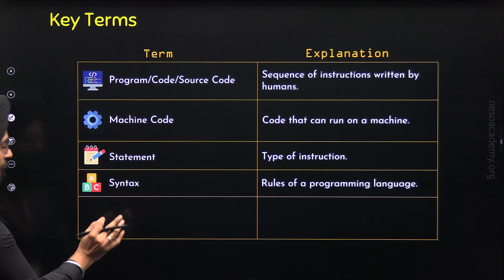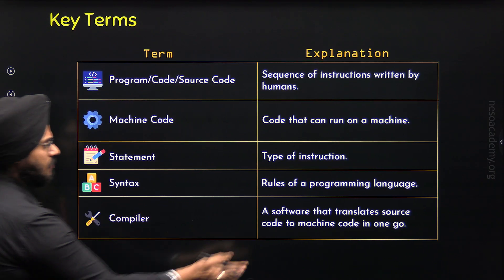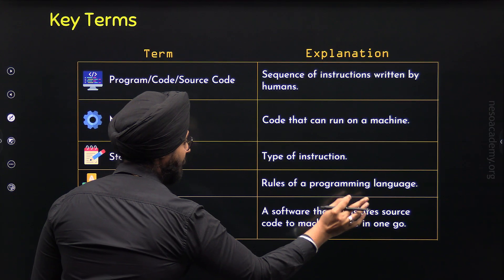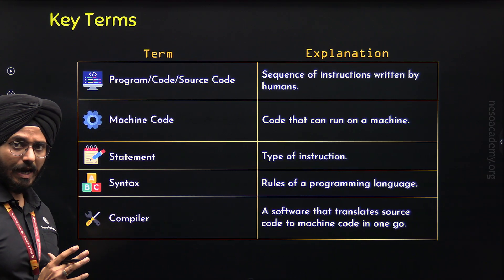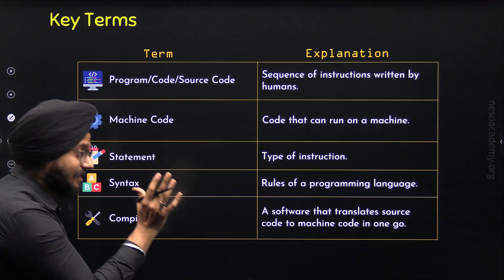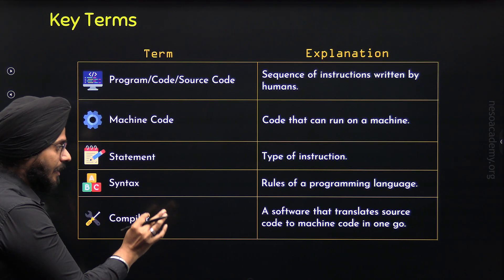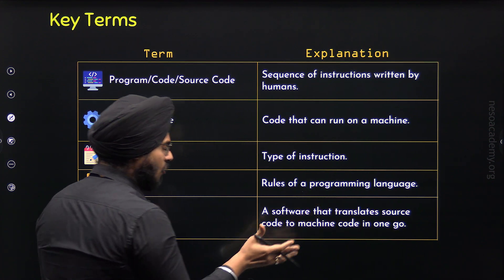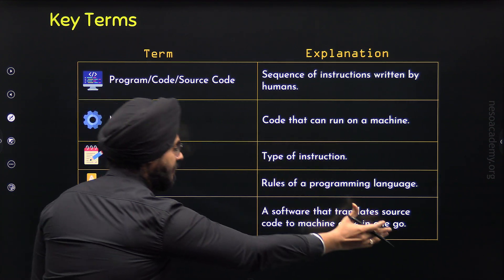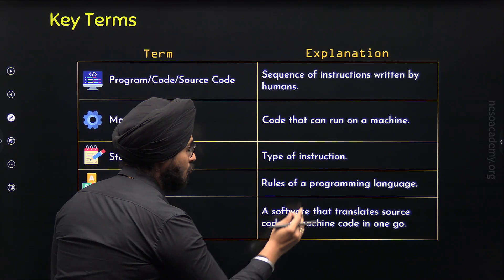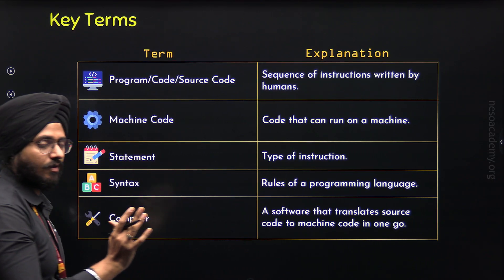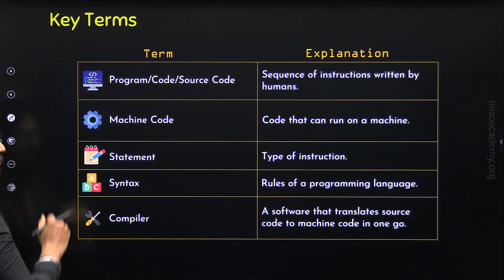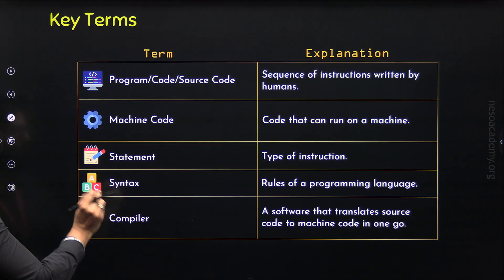Now here comes the fifth term, which is Compiler. A Compiler is a software that translates source code to machine code, and it does so in one go. That means it takes the entire source code and translates it all to machine code at once. So a Compiler is a software which translates source code to machine code in one go.